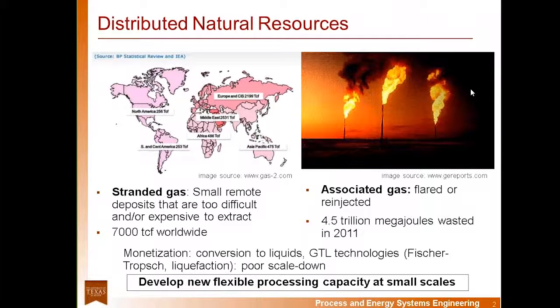All right, so our motivation to explore this work stems from the vast worldwide deposits of stranded and associated natural gas. Stranded gas is natural gas found in small, remote deposits that are either too difficult to get to or too expensive to export and transport. Worldwide, it is estimated that there are 7,000 trillion cubic feet of stranded gas, which represents about 30 to 60% of the total natural gas deposits found on Earth.